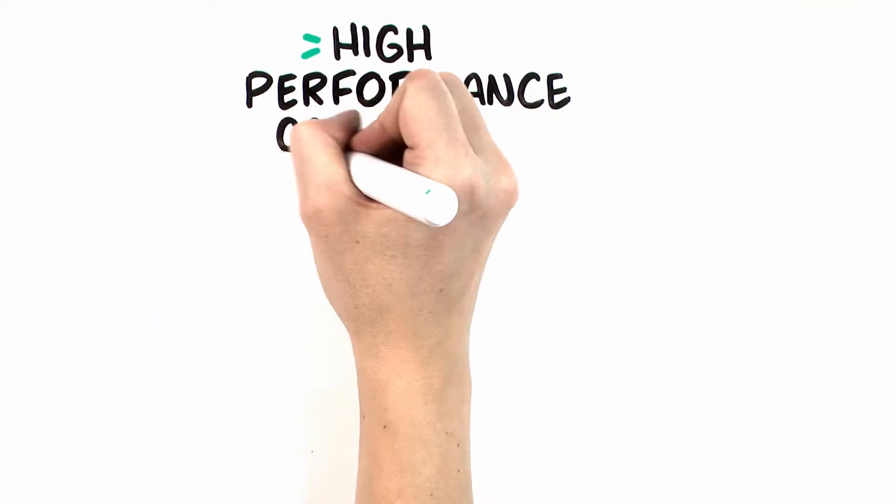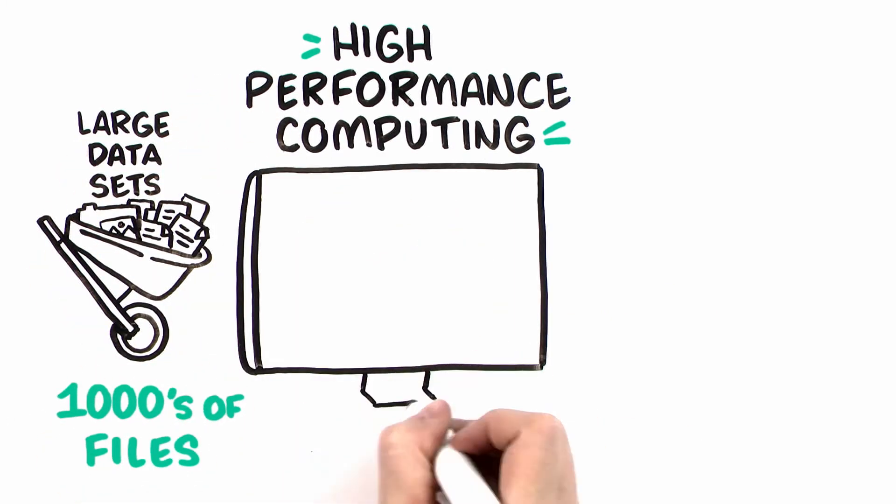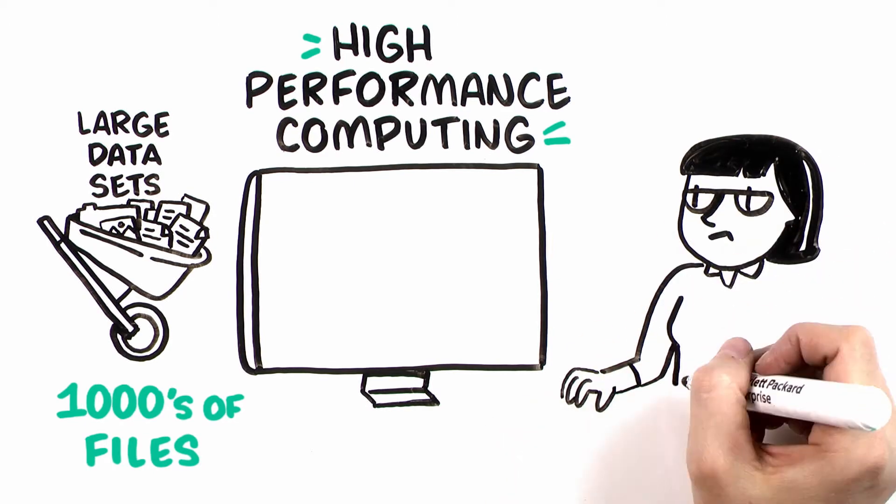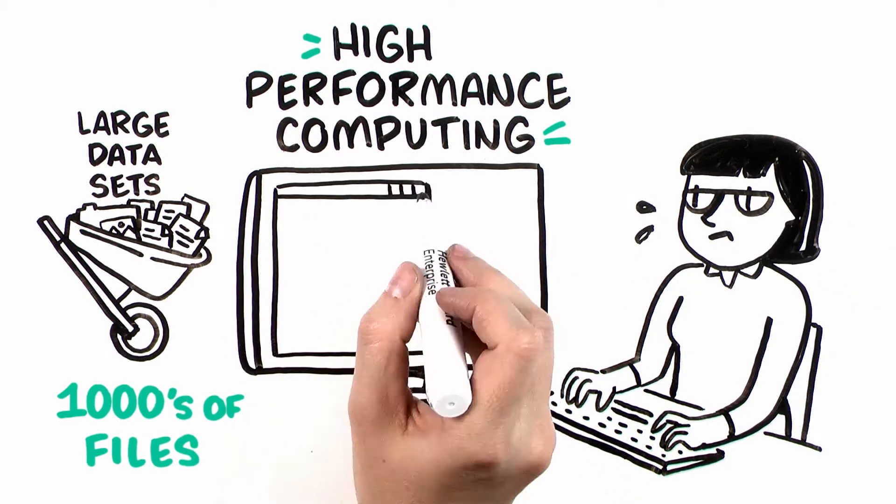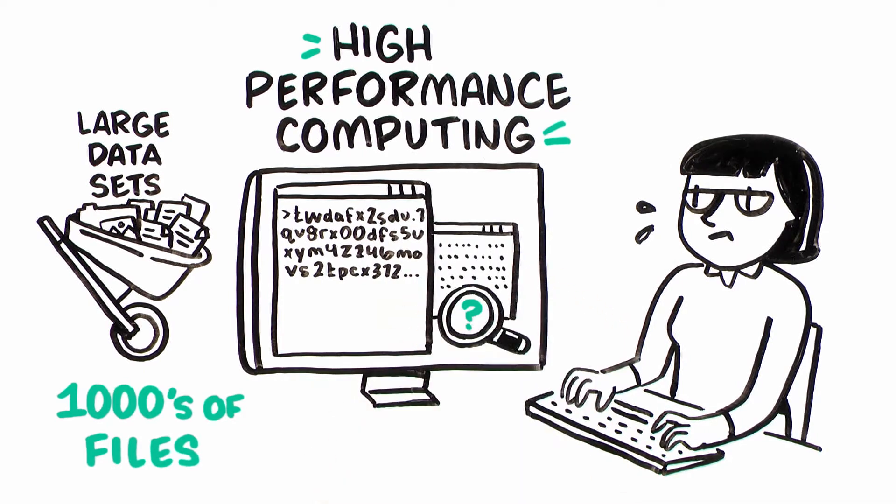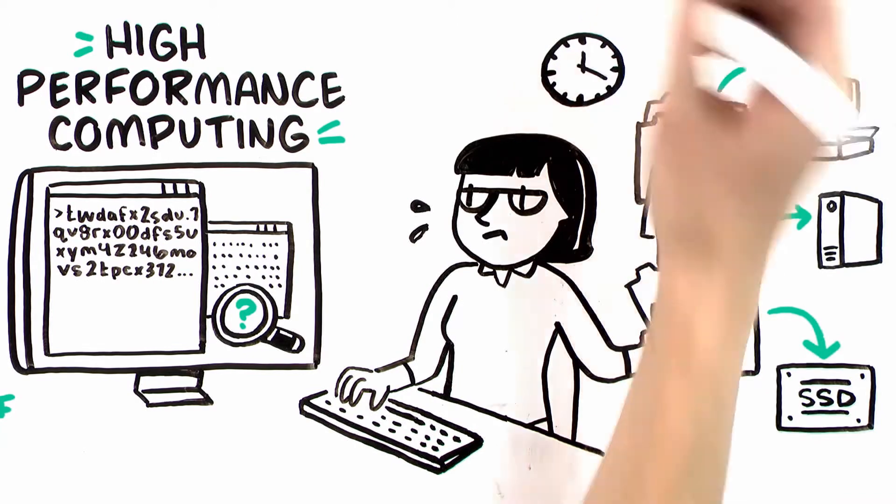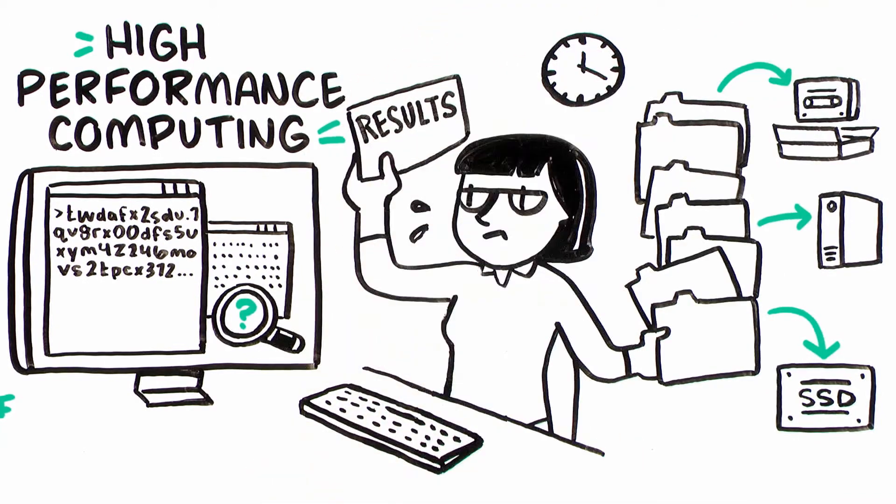High-performance computing works with large datasets – hundreds, even thousands of files. Without software like DMF, an administrator has to manage data flows manually, by writing scripts or manually searching for data, move them to the right location at the right time for processing, and then move the results to the proper location.